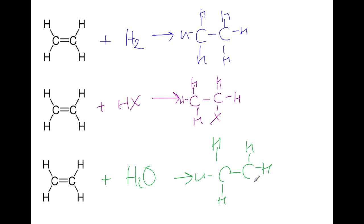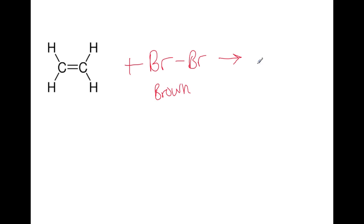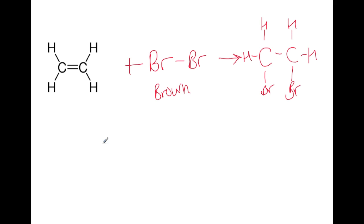In the same way as adding HX, if you have an asymmetrical alkene you can produce two different products. One of the most important addition reactions for an alkene is adding bromine. Bromine is a diatomic molecule — when two bromine atoms are joined together they have a brown colour, but when added onto an alkene the bromine-bromine bond breaks and it becomes colourless. This decolourising of bromine is the test for unsaturation.